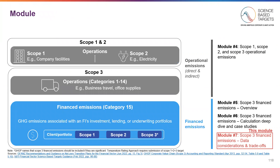As discussed in Module 3, emissions are classified into Direct Emissions (Scope 1) and Indirect Emissions (Scope 2 and 3). Scope 3 can be divided into those originating from a company's operations, Categories 1 through 14, and those originating from Finance Emissions, Category 15. In Modules 4 through 7, we will explore how to set targets for each of these categories. Because Scope 3 finance emissions are so much larger for financial institutions, we will spend more time on how to calculate them. This module focuses on the key data considerations that financial institutions will face.